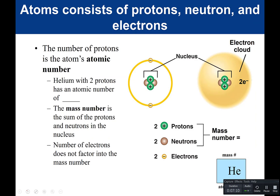For an element, you cannot change the number of protons. If you change the number of protons, you change the element. The number of protons is referred to as the atom's atomic number. So when we talk about atomic number, we're talking about the number of protons. Helium with two protons has an atomic number of two.